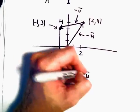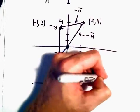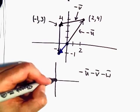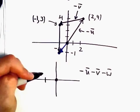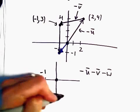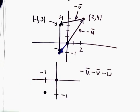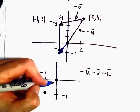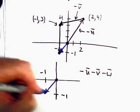So the vector negative u minus v minus w, we could represent that as a vector that starts at the origin and then it just goes one unit to the left and one unit downwards. So our vector again will just look just like that.